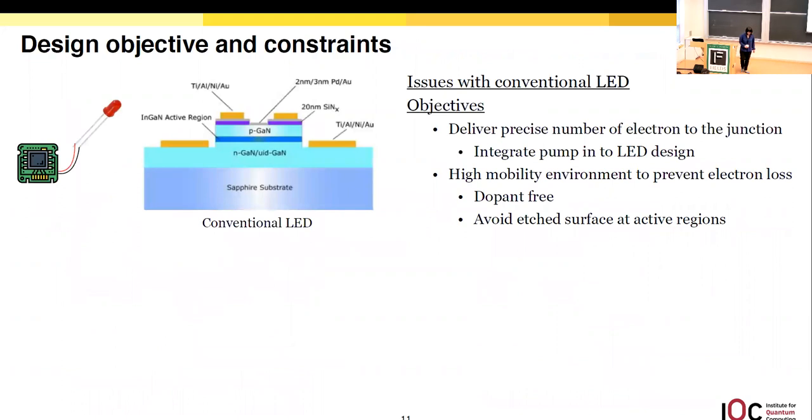Now we have a working single electron pump. To get a single photon source, the obvious way is just to hook up this single electron pump to an LED. Unfortunately, this will not work. The reason being: first, single electrons will not travel far in such heavily doped environment in a conventional LED. Second, even if some electrons do make it to the junction, due to the large area of the LEDs, their collection efficiency will be very low. And third, it has to be a fast LED, in the gigahertz range. To combat all this, we need to deliver precise number of electrons to the junction directly, which means to integrate the pump to the LED design. We also need to create a high mobility environment to prevent any electron loss during transportation. That could include 2DEG structure and avoid etching surfaces in active regions.